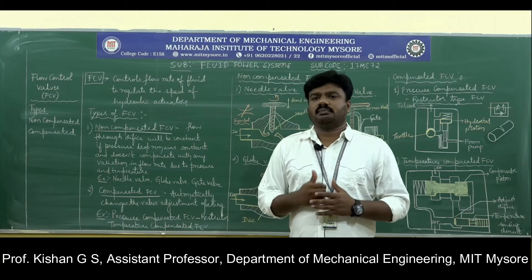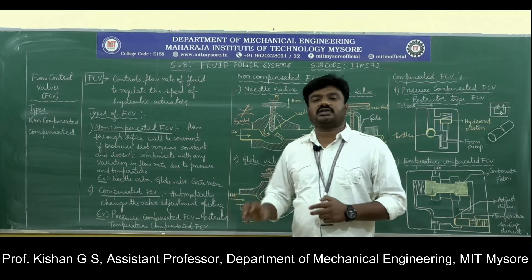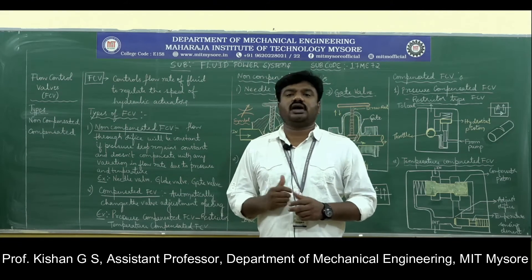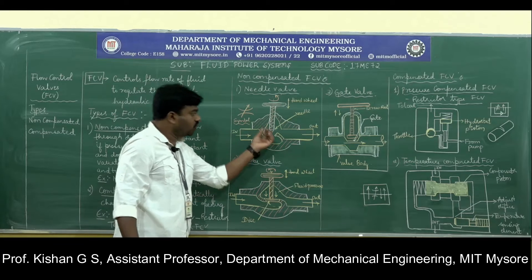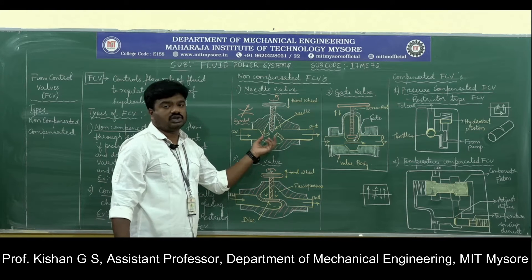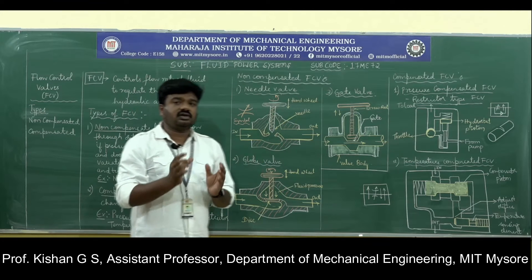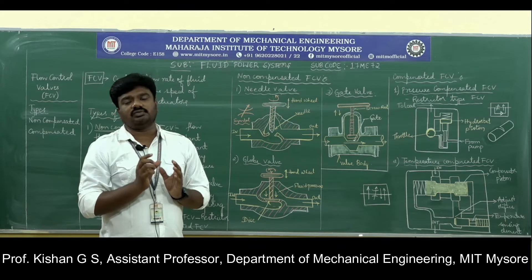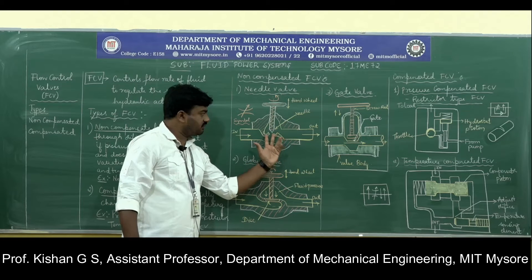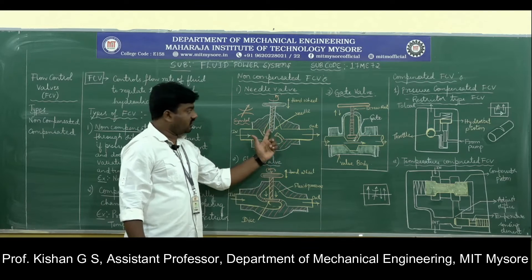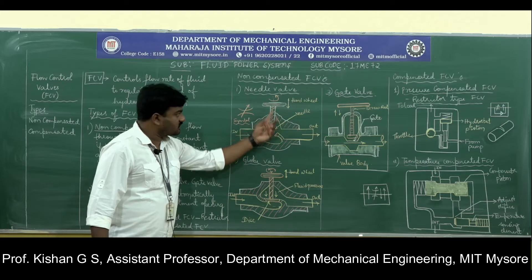As the name itself suggests, flow control valve — valves are the control components that lead to controlling the fluid flow. Flow control valves are devices that control the flow rate of the fluid. The purpose of controlling the flow rate of fluid is the regulation of speeds in the hydraulic actuator. We have two types of actuator: one is linear actuator, that is piston-cylinder arrangement, and another is rotary actuator, which are hydraulic motors.